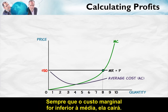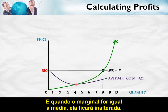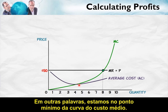Suppose your marginal grade equals your average grade — say you get 80% again. Then your average grade is flat; it doesn't change. What is true for average and marginal grades is also true for average cost and marginal cost. Whenever marginal cost is below the average, the average is falling. Whenever marginal cost is above the average, the average is rising. And where marginal equals average, the average is flat — in other words, we are at the minimum point of the average cost curve.